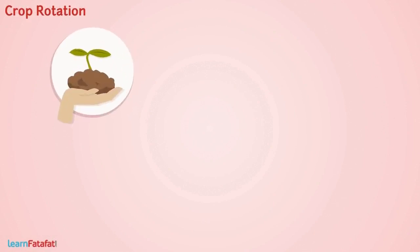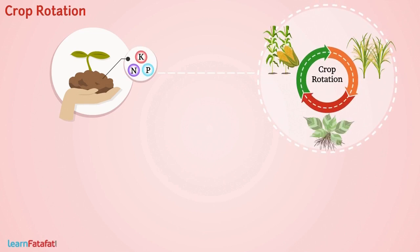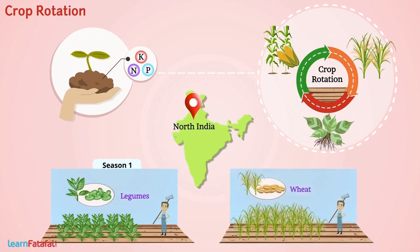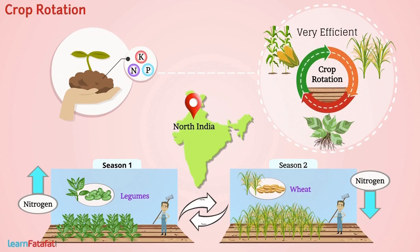Crop Rotation. There is yet another very efficient way to enrich soil with nutrients — crop rotation. Growing different crops alternately one after another in the same land is called crop rotation. For example, farmers of North India used to grow legumes as fodder in one season and wheat in the next season. This helped to replenish nitrogen in the soil. This method is very efficient and we should encourage farmers to use it.